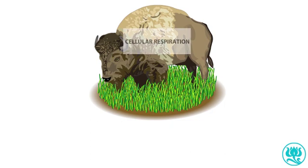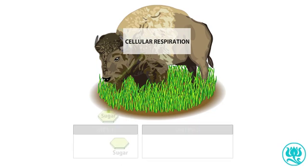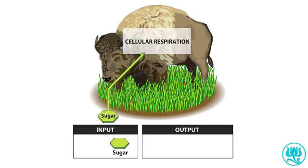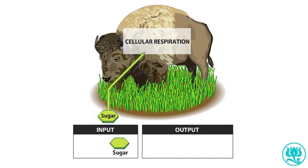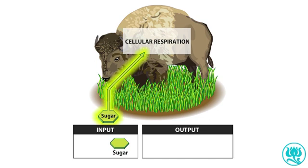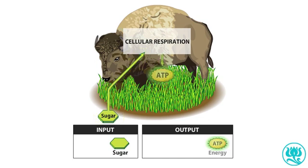In cellular respiration, plants, animals, and all other living organisms harvest energy by breaking down energy-rich molecules. In this example, a bison ingests grass, digests the food, and delivers food molecules to cells of its body. As energy is released by the reactions of cellular respiration, cells capture and store the energy in the bonds of ATP molecules.